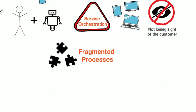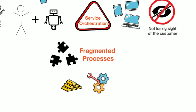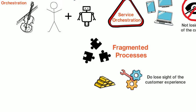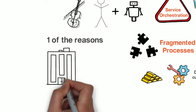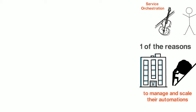Fragmented processes that are defined by the resource types rather than the process itself do lose sight of the customer experience, and this is one of the reasons that companies are struggling to both manage and scale their automations.